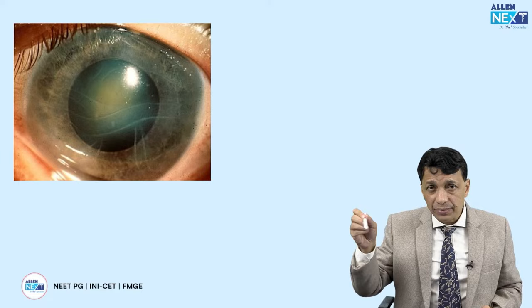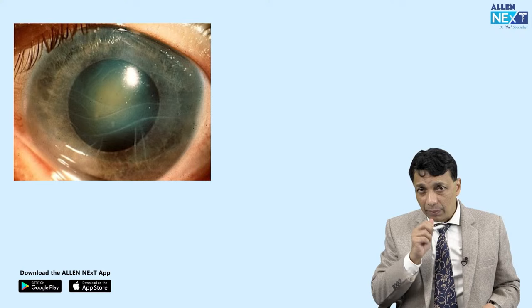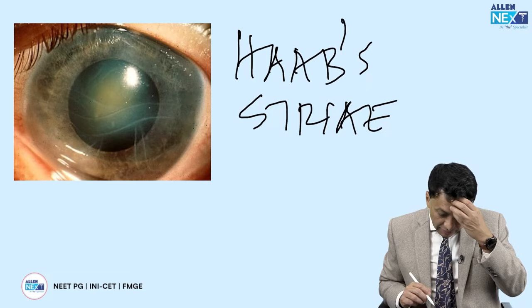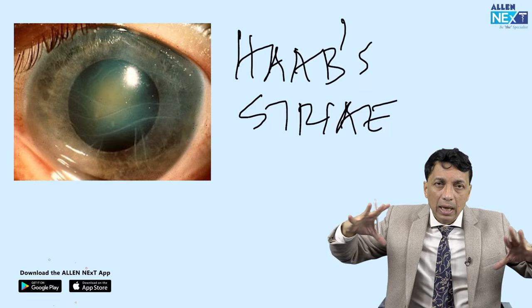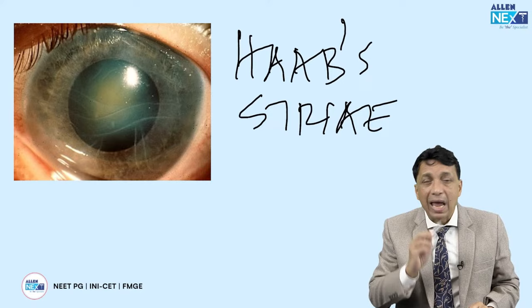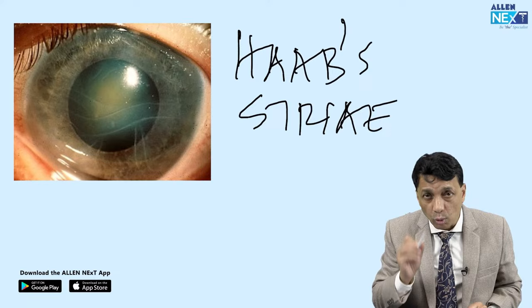Look at this classic parallel horizontal railway track lines right across the cornea. These are the famous Haab's striae — striae means folds. Haab's striae are seen in buphthalmos and primary congenital glaucoma, because of the stretching of the eyeball due to raised intraocular pressure, which pulls Descemet's membrane apart and tears it. These ruptures of Descemet's membrane are the famous Haab's striae. The other striae in ophthalmology are the Vogt's striae, found in keratoconus.